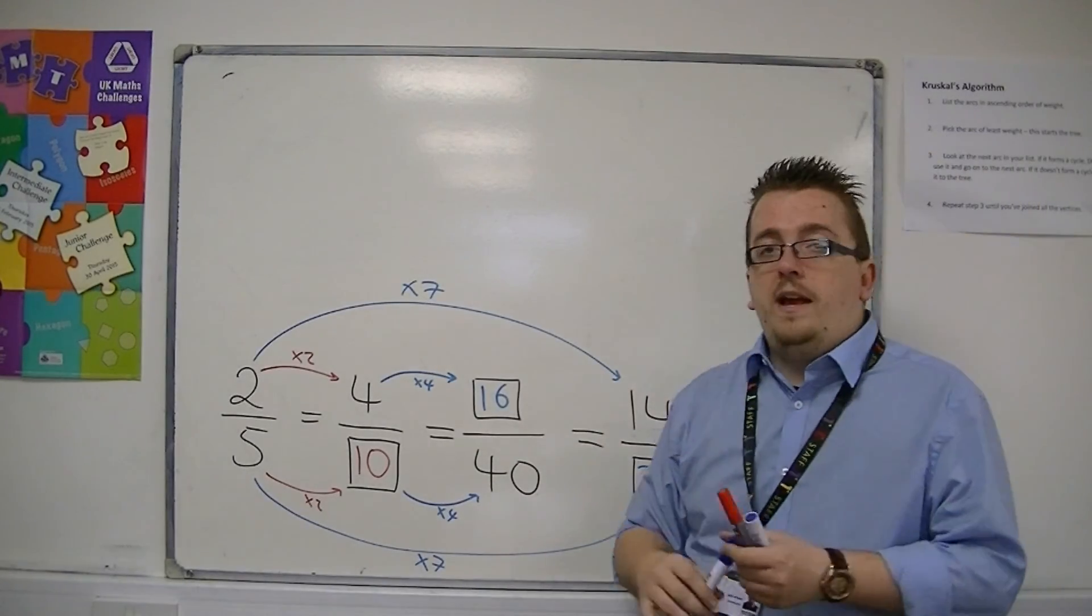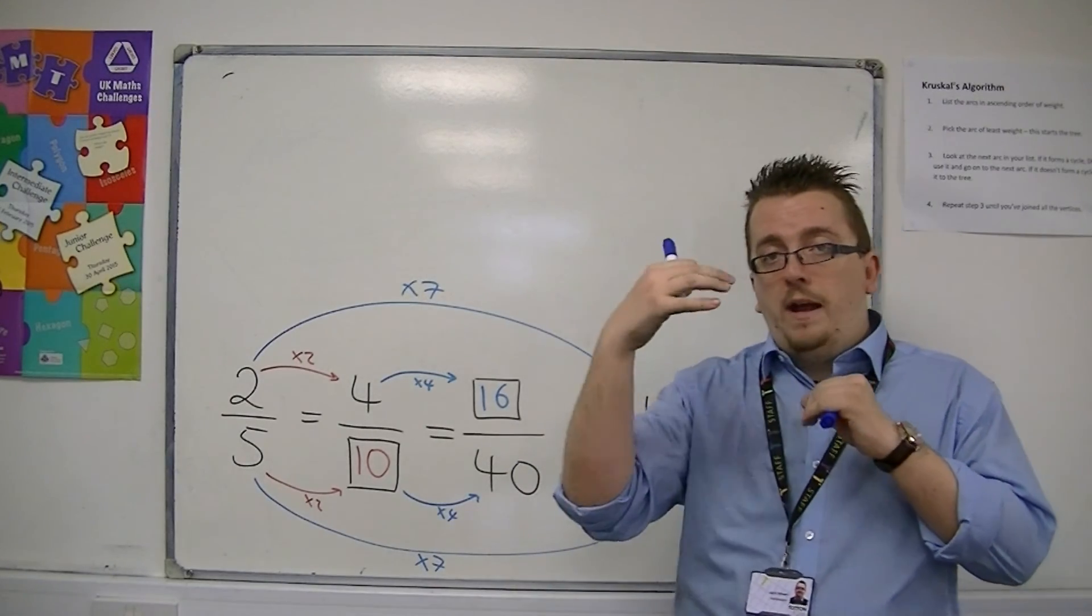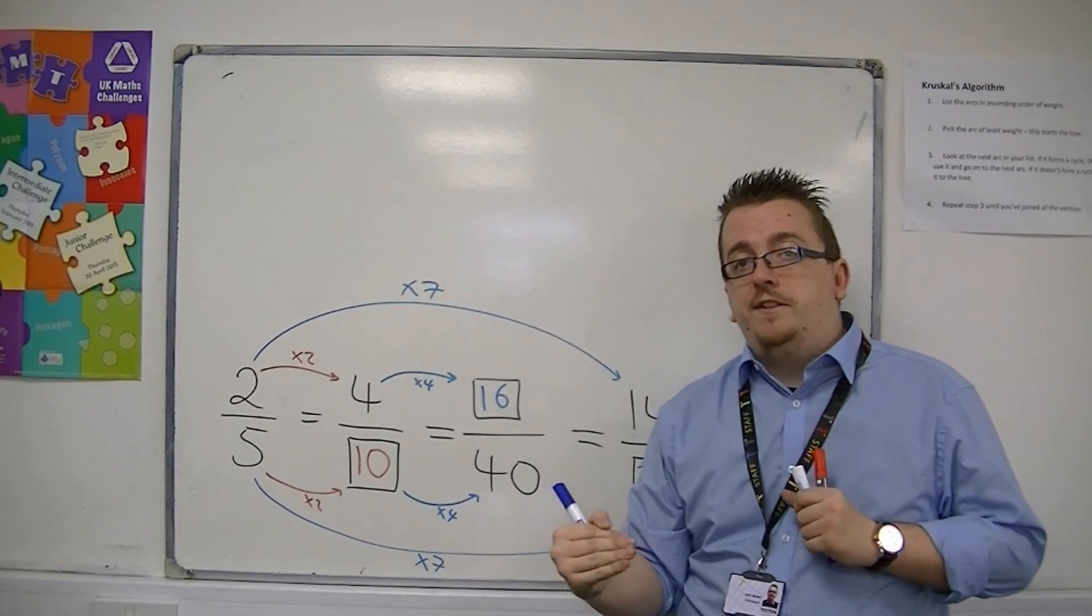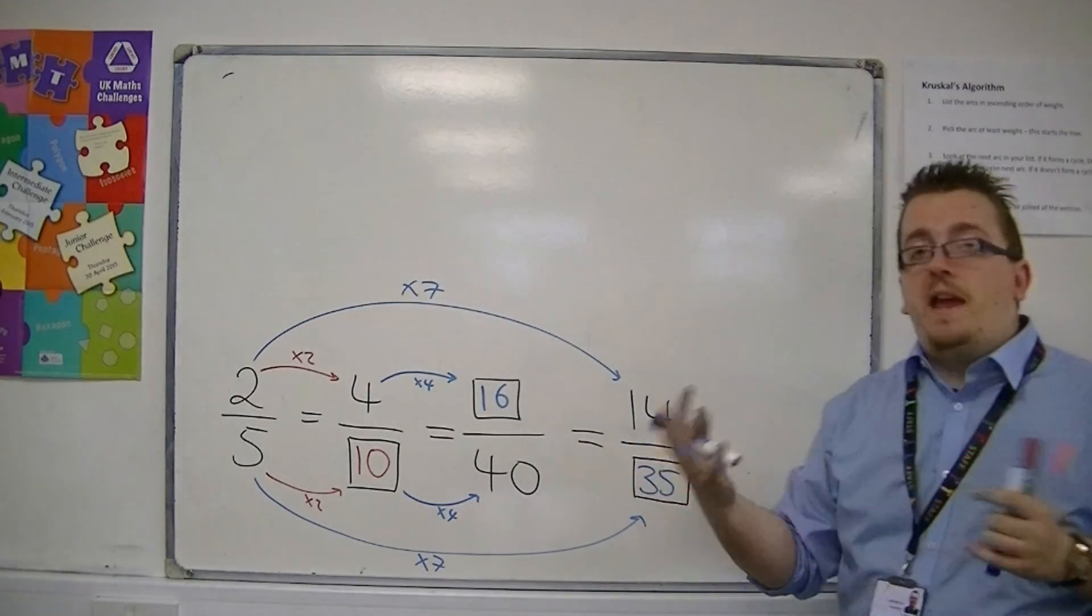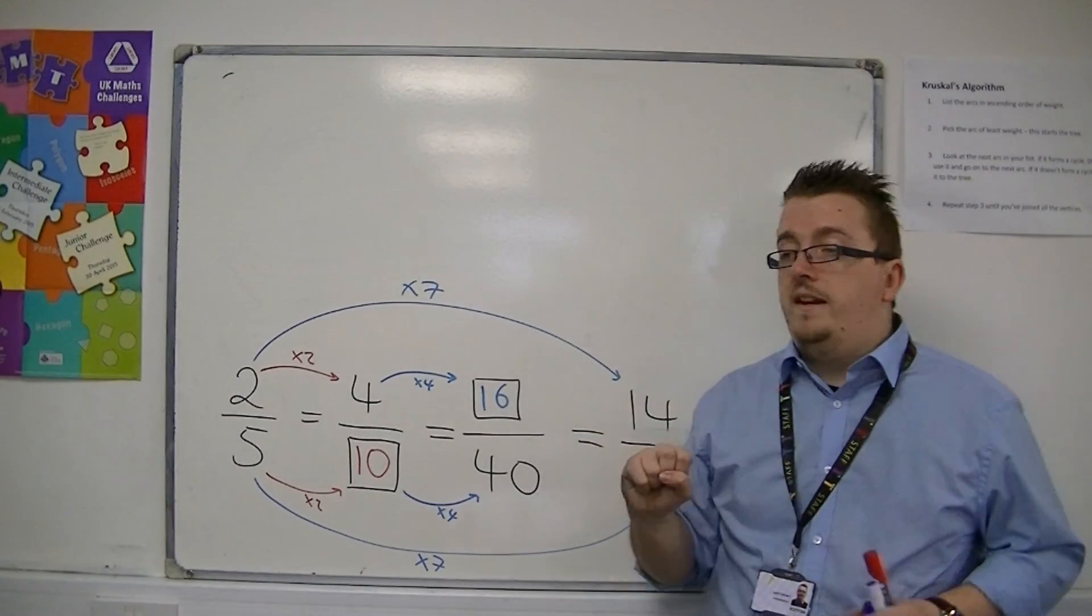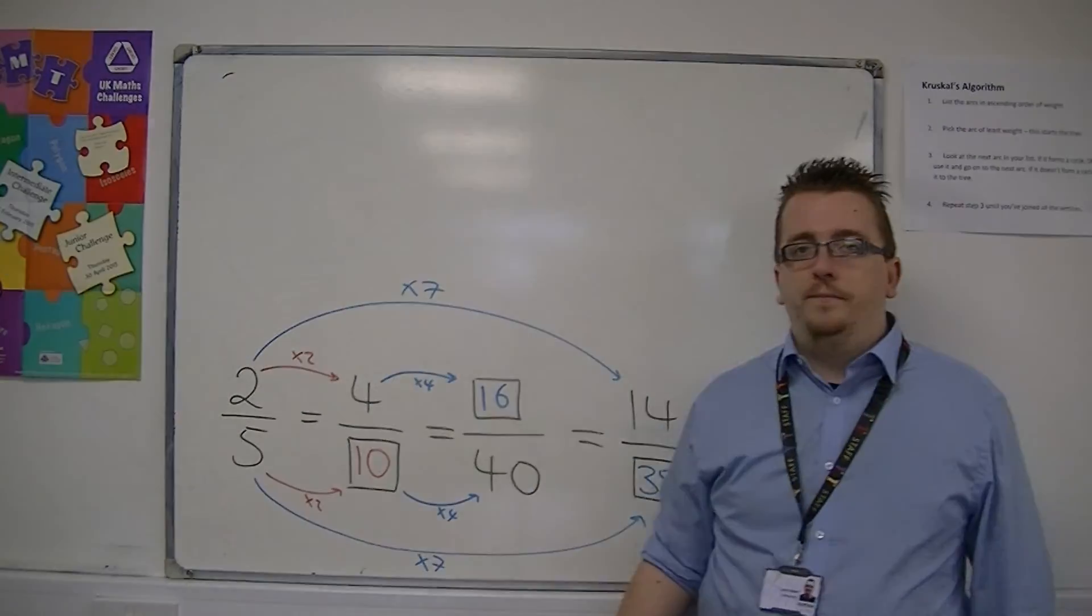This is how you can multiply the top and bottom of a fraction, the numerator and the denominator, by the same value to get an equivalent fraction. And this technique is going to lead us on to how we can simplify fractions in the next video.